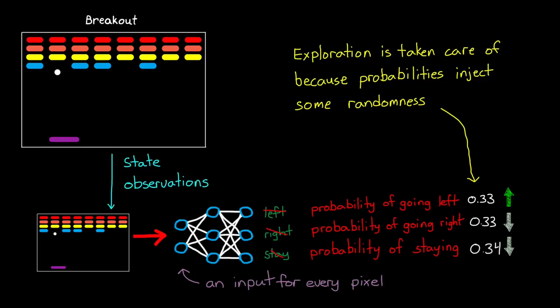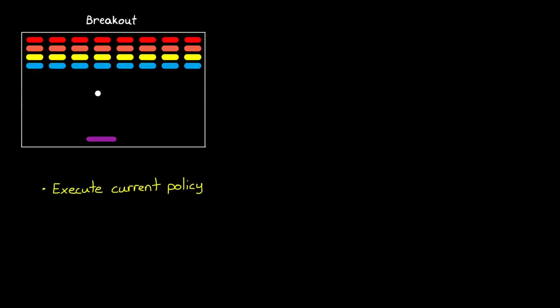A stochastic policy takes care of the exploration exploitation problem because exploring is built into the probabilities. Now when we learn, the agent just needs to update the probabilities. Is taking a left a better option than right? Push the probability that you take a left in this state a little bit higher.